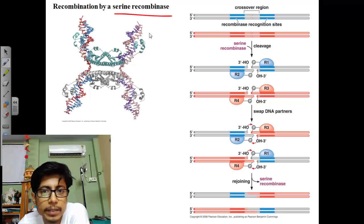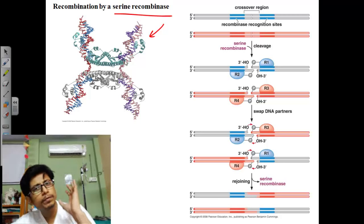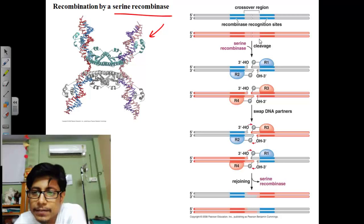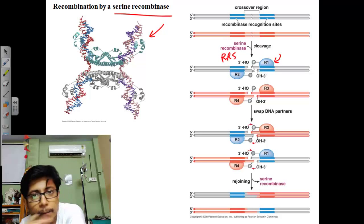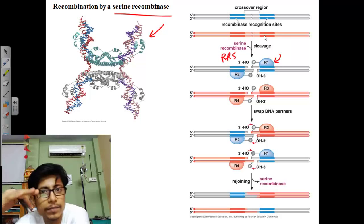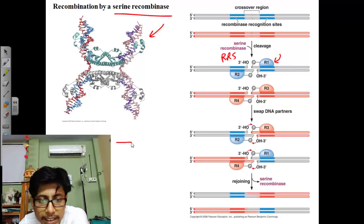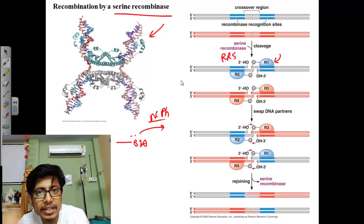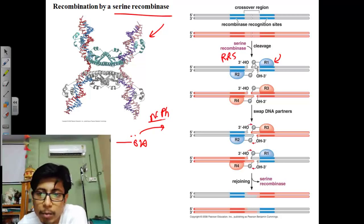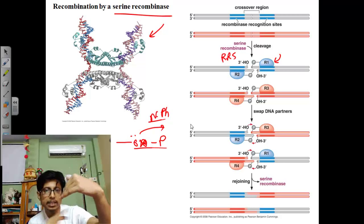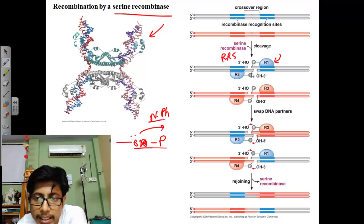Serine recombinase has four different arms. The recombinase binds to the RRS — R1, R2, etc. Once bound, the recombinase attacks the phosphodiester backbone using the hydroxyl side chain as a nucleophile. It drags one phosphate away and that phosphate is added to the enzyme, destabilizing the phosphodiester backbone and breaking the strand. This creates a free three-prime hydroxyl group at the break. Both strands are broken this way.